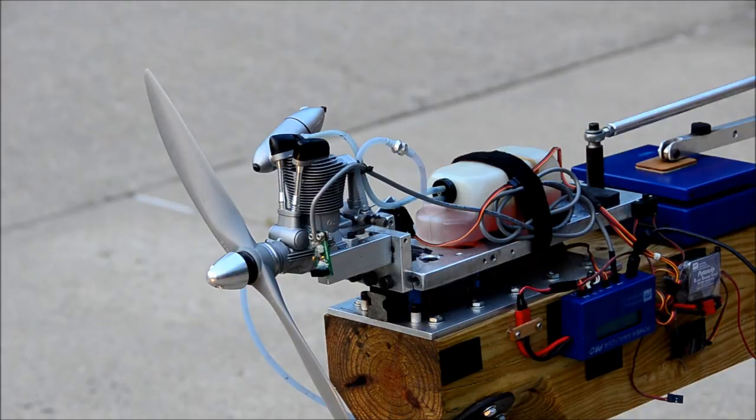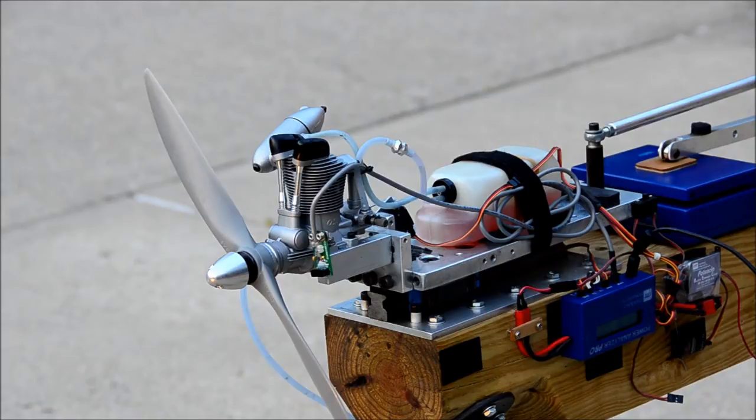This test is with the highest load propeller of the seven that we've included in our testing, and it's an APC 15x8. With this propeller, it turns about 7,900 RPM, producing nine pounds of static thrust at about 84 decibels.